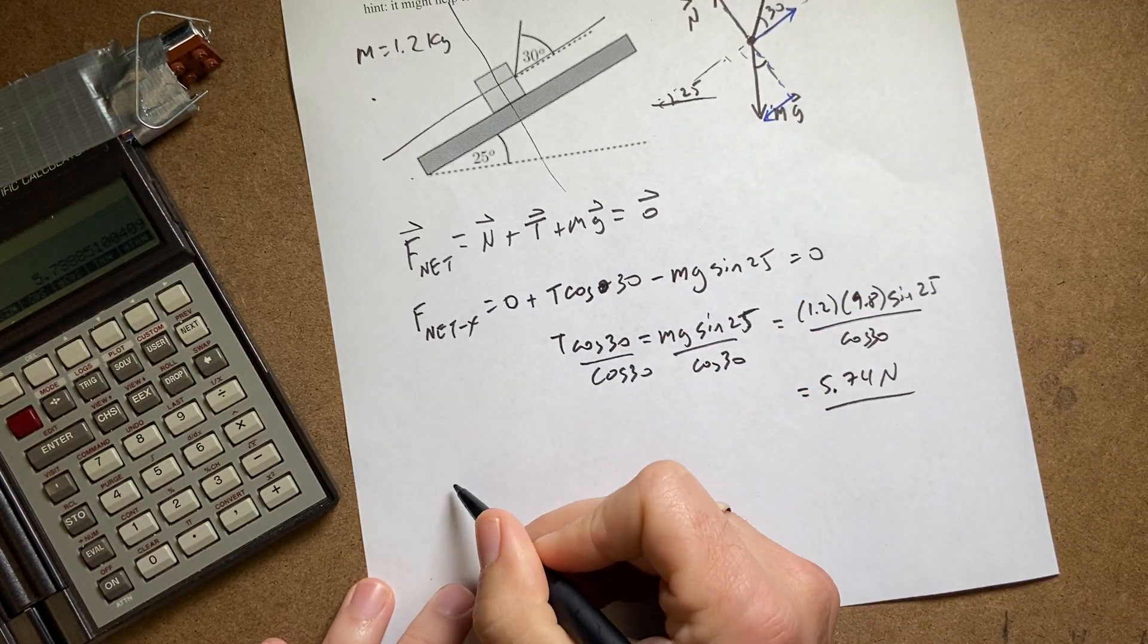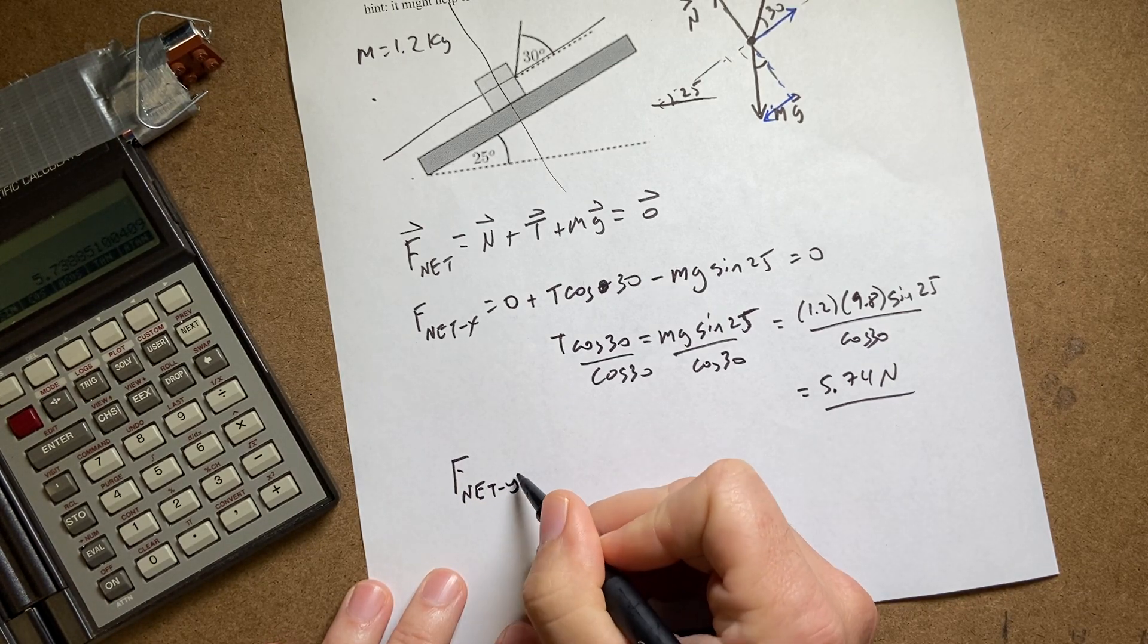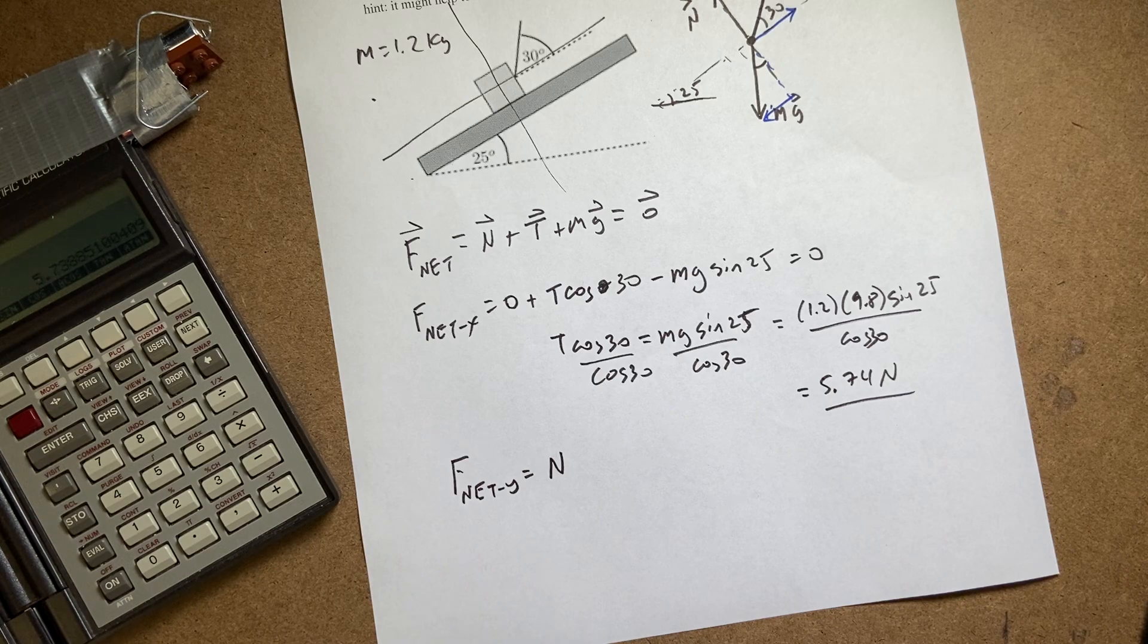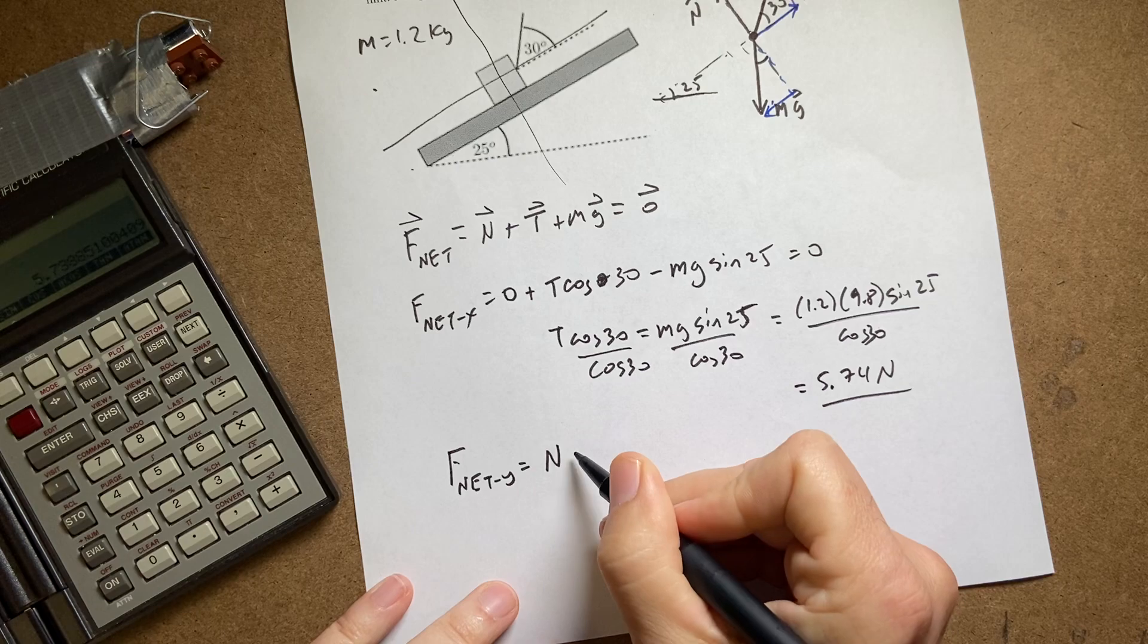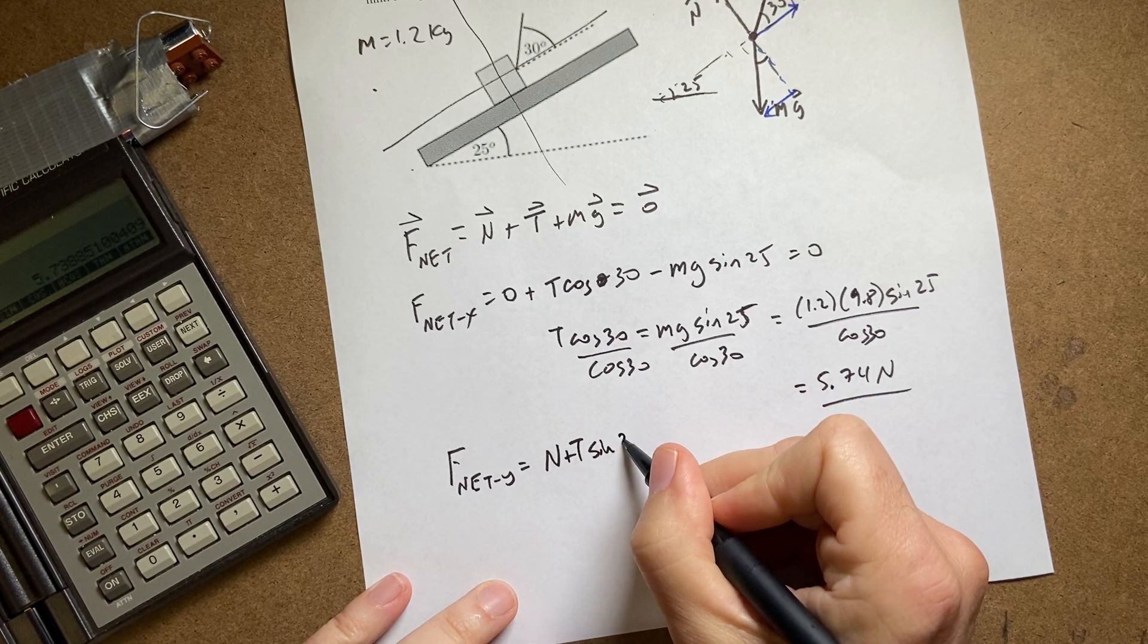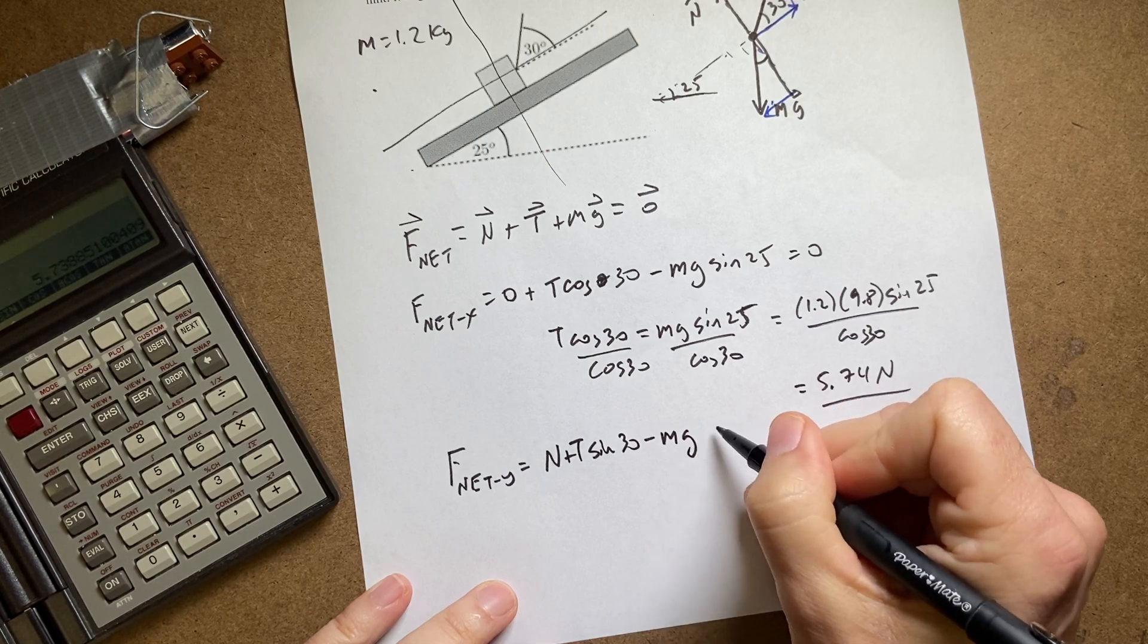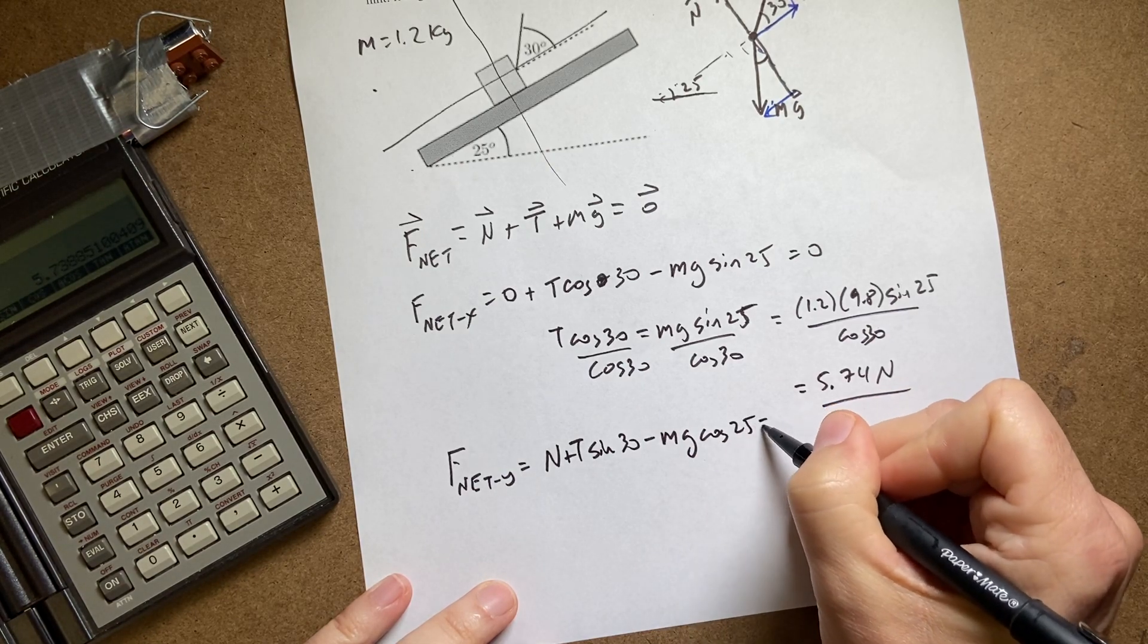So if I do the same thing in the y direction, f net y. I have n. Then I have this part of the tension. So it's going to be t sine 30. That's plus t sine 30. And then I have this part of the gravitational field, which depends on the cosine. So it's going to be minus mg cosine 25 equals zero.